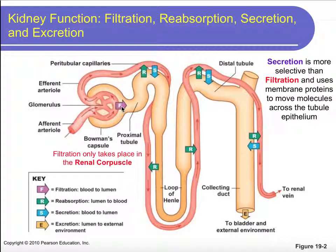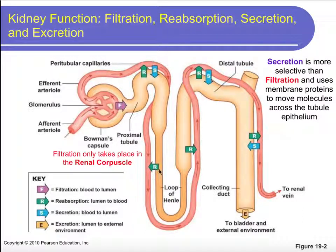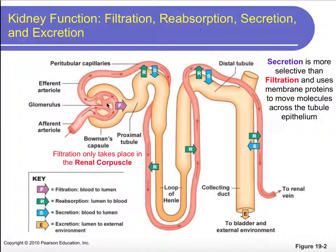In the proximal tubule, we do mostly reabsorption and some secretion. Reabsorption moves from the lumen of the nephron back into the blood — in this case, the peritubular capillary. In the entire loop of Henle — both descending and ascending limb — the only thing we do is reabsorb. In the distal tubule, we continue to reabsorb and can do more selective secretion. Same in the collecting duct — we reabsorb and do some selective secretion. Whatever still remains at the end of the collecting duct is excreted from the body, from the lumen of the nephron out into the external environment.